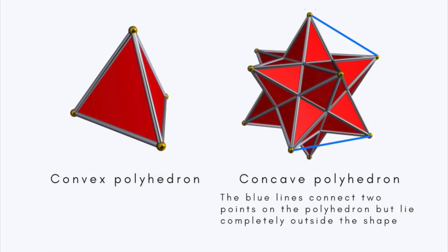Polyhedrons, like polygons, may be convex or concave. If a line that connects any two points on the surface of a polyhedron is completely inside or on the polyhedron, the figure is convex. Otherwise, it's concave.